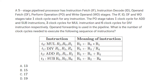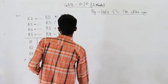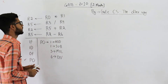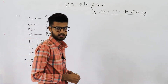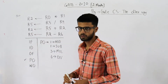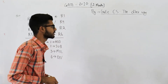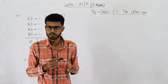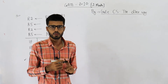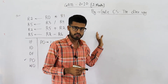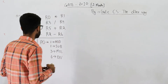Operand forwarding is used in the pipeline. The question asks for the number of clock cycles needed to execute a given sequence of instructions. The program and four answer options are provided. We'll solve this question using two methods: first the shortcut I taught in the theory lectures, and second the traditional method where we draw the pipeline cycle diagram.